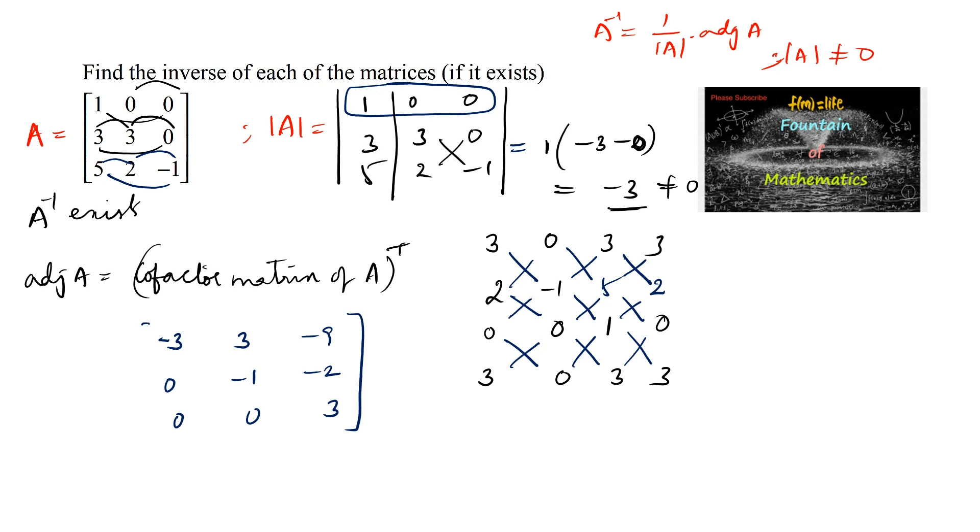This is the cofactor matrix. The transpose of it will give: minus 3, 0, 0; the second column 3, minus 1, and 0; and third column minus 9, minus 2, and 3.